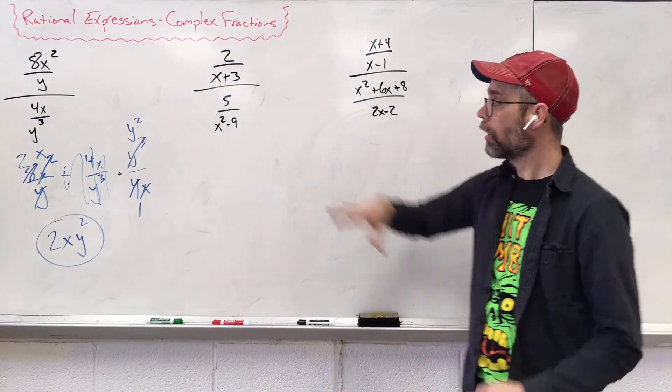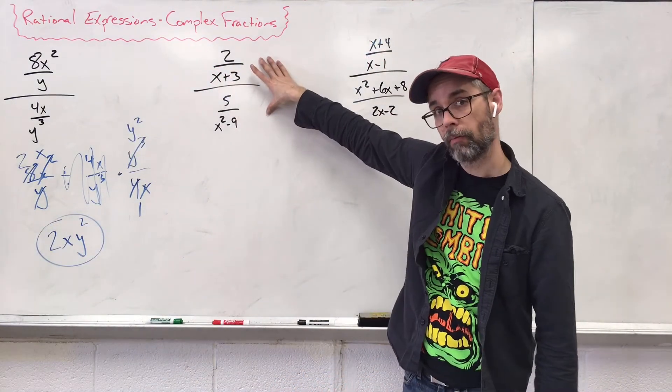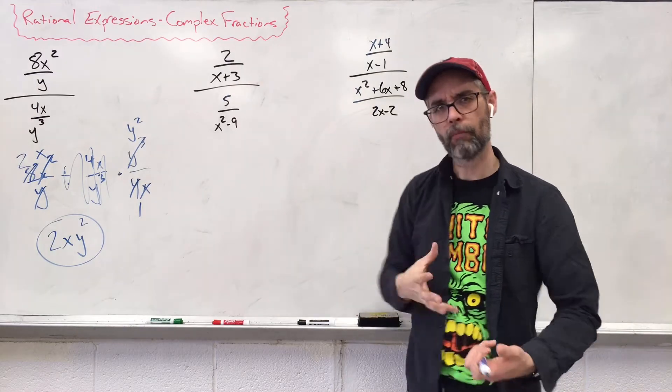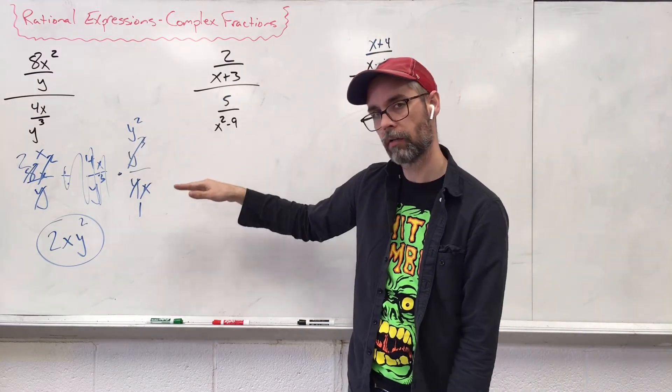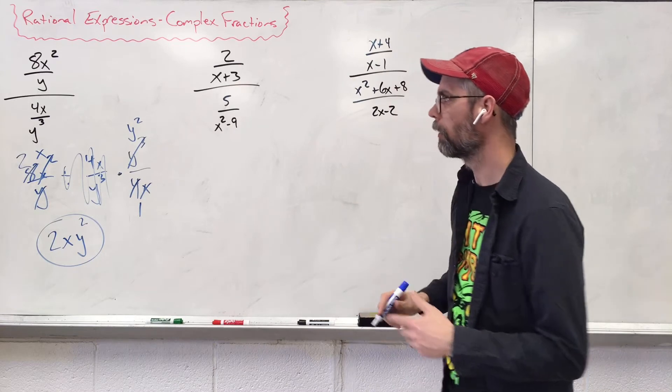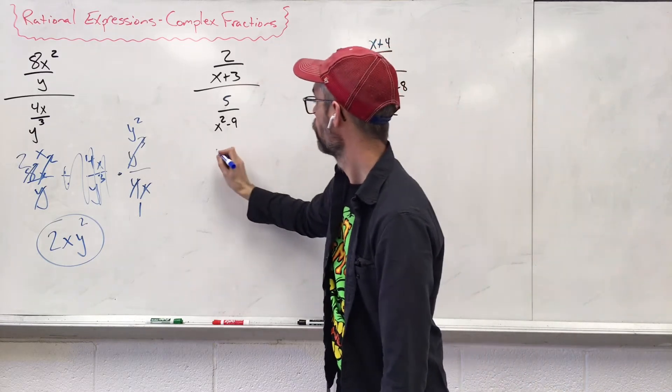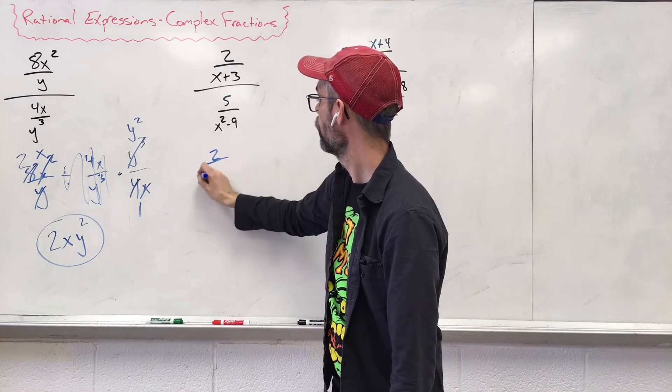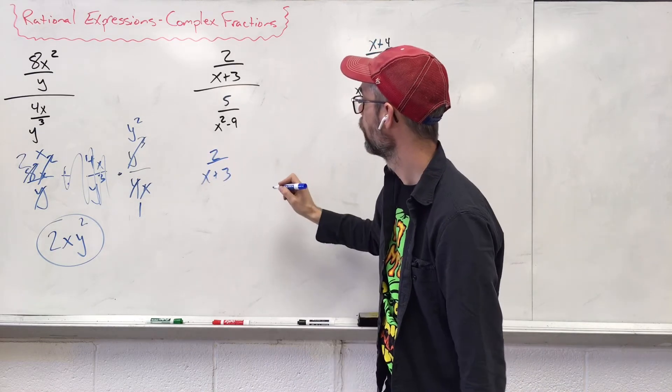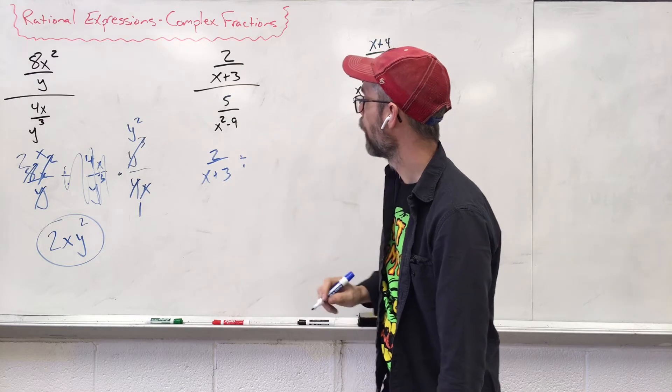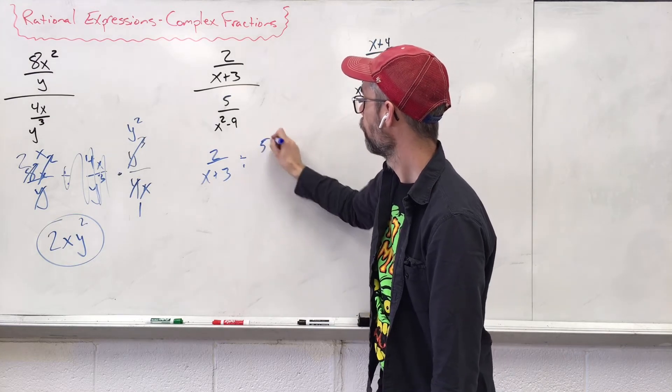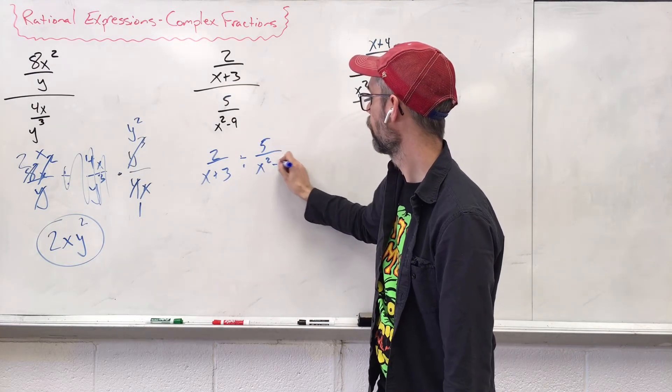We're starting off with a really ugly looking problem, but when we can simplify and break it down into a form that we understand, it becomes less scary. So let's rewrite it. Fraction, fraction, big fraction. We're going to say two over x plus three divided by five over x squared minus nine.